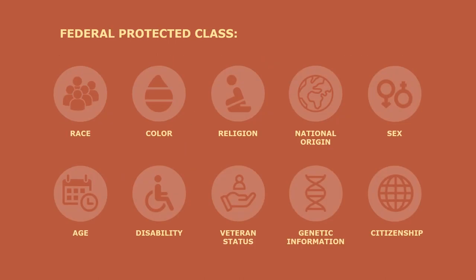The U.S. Equal Employment Opportunity Commission, known as the EEOC, enforces federal laws prohibiting protected class employment discrimination on the basis of race, color, religion, national origin, sex, age, disability, veteran status, genetic information, and citizenship. These laws protect employees and job applicants against employment discrimination when it involves the protected characteristics we just explored.